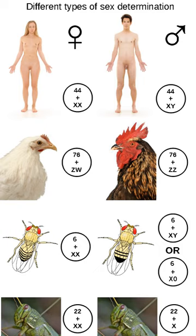Some fish have variants of the XY sex determination system, as well as the regular system. For example, while having an XY format, Xiphorphorus nesawylchiothal and X. milleri also have a second Y chromosome, known as Y*, that creates XY females and YY males. At least one monotreme, the platypus, presents a particular sex determination scheme that in some ways resembles that of the ZW sex chromosomes of birds and lacks the SRY gene.